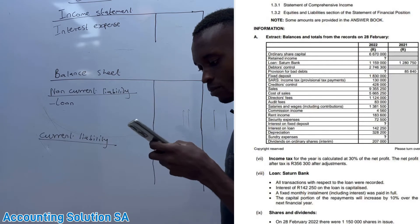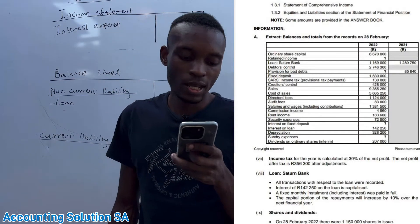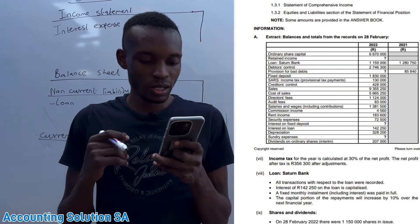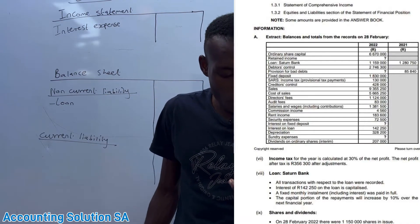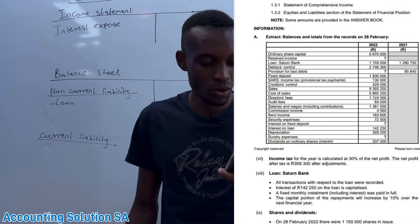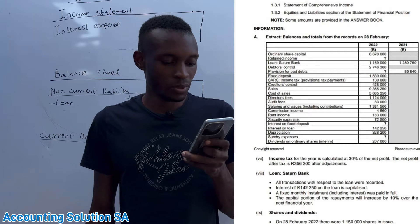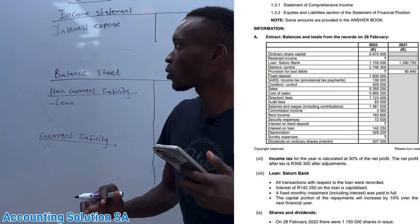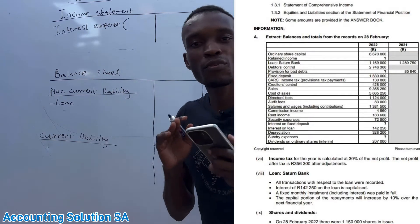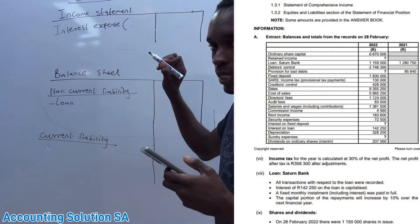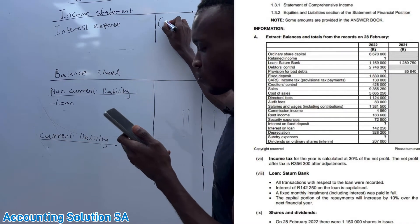Okay, transaction number six. They said a loan from a certain bank — all transactions with respect to the loan were recorded. You have to take note of that. Interest of 142,250 on the loan is capitalized. In other words, interest is 142,250. This is the one that you are going to record under interest expense.